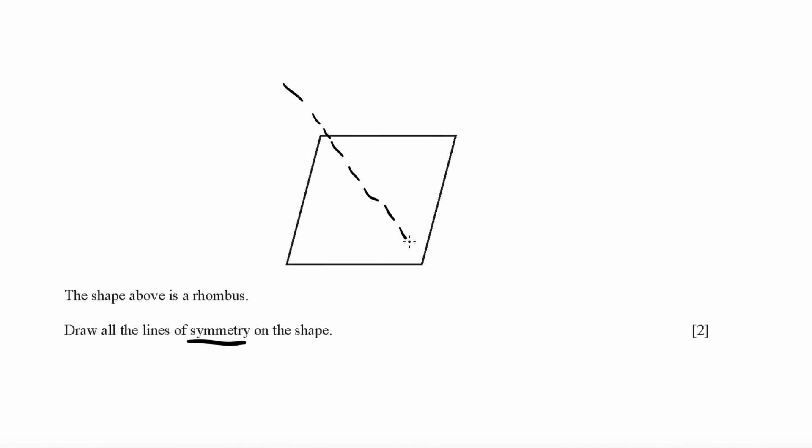To find the symmetry of a shape, in this shape it's a rhombus, so there are only two lines of symmetry which are like this. They can give you other shapes and you have to find the lines of symmetry. A line of symmetry is simply when you have two opposite mirrors when you cut the line through.